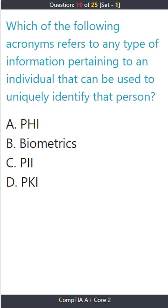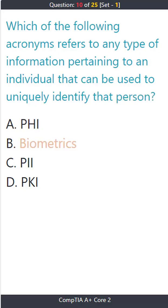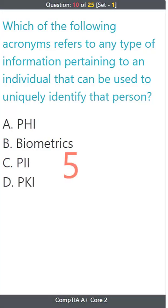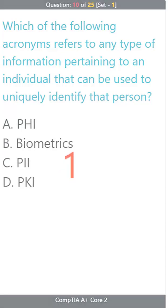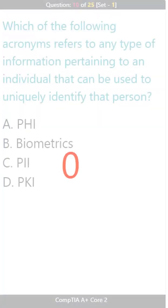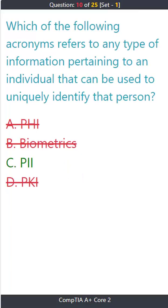Question 10: Which of the following acronyms refers to any type of information pertaining to an individual that can be used to uniquely identify that person? A) PHI. B) Biometrics. C) PII. D) PKI. The correct answer is C: PII.